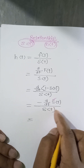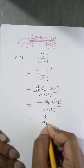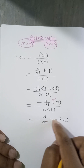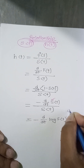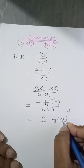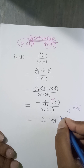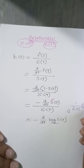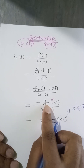Next, we can rewrite this expression using a logarithm. We write d/dt of log S(t). Taking the derivative of log S(t) gives us 1/S(t) times d/dt of S(t), which is the same expression we had before.